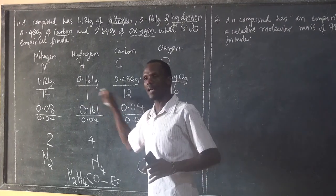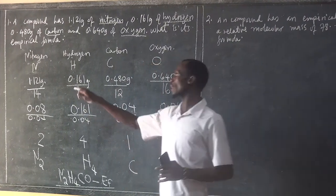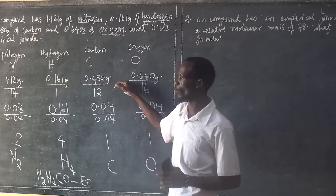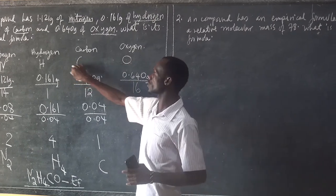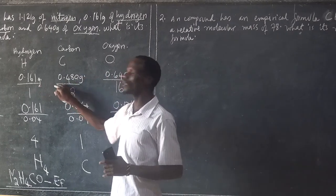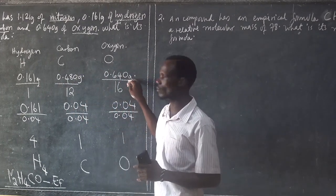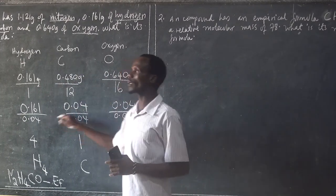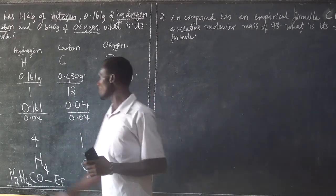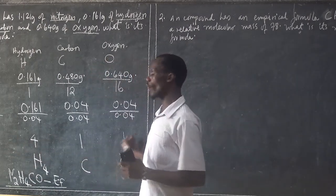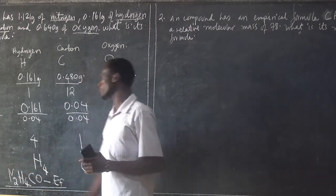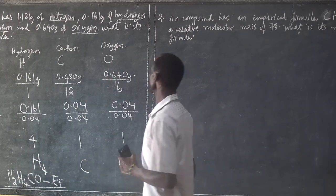No matter whether you have been given masses or abundances in terms of percentage, you have to understand the principles. The first principle: write down those symbols. The second principle: list the masses or abundances. Then divide by their respective relative atomic mass. After that, look for the smallest number, then divide by the smallest number. If you have decimals, you have to approximate those decimals into full numbers. Then you can determine the formula of the elements.